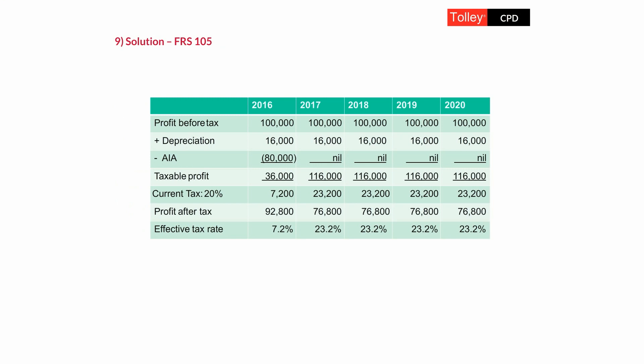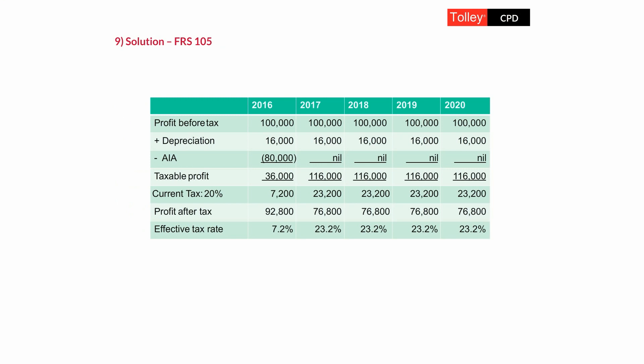Current tax in the first year at 20% is only £7,200, then £23,200 for the other four years. The effective tax rate in the first year is only 7.2%, giving a profit after tax of £92,800 — essentially distributable profits. But in the following four years, taxable profit is £116,000 against accounting profit of £100,000, so we have a much higher effective tax rate and a correspondingly smaller distributable profit after tax.